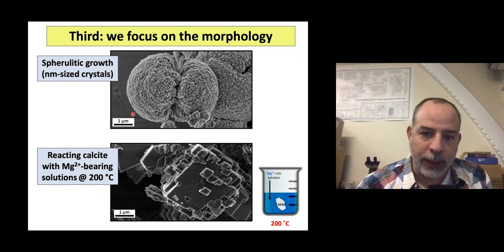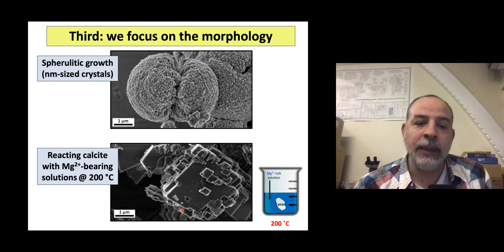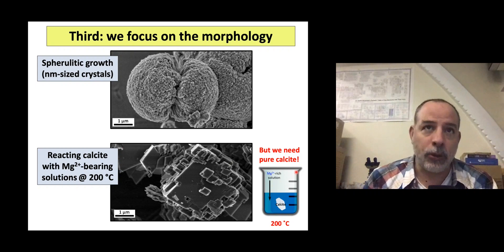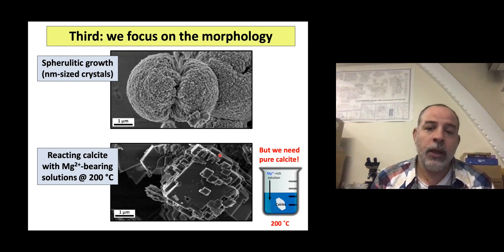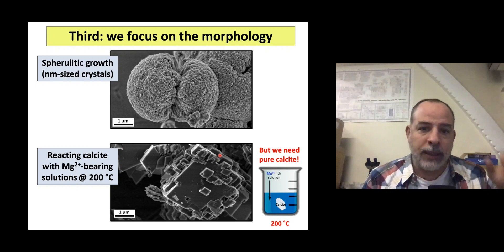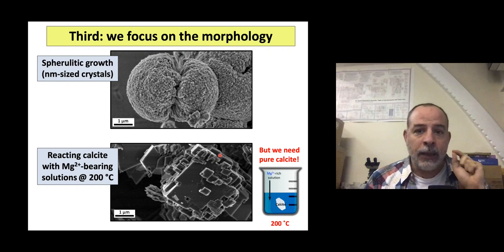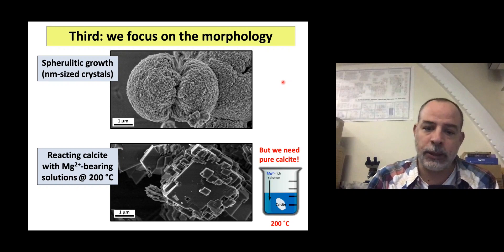So there are three main variables: the composition of your aqueous solution — the chemical variable — the structural variable of order and disorder in dolomite, and the morphology variable. All of these translate into very different properties.